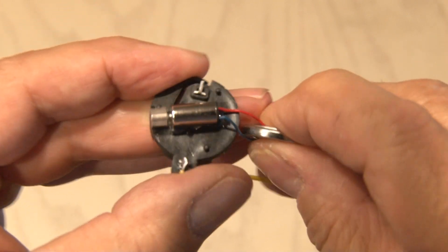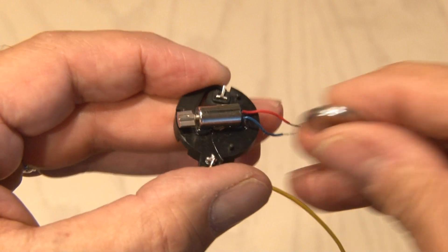The easiest way to do that is to use the button cell battery on the two wires and fire that motor up. Mine is spinning just fine with no obstructions.